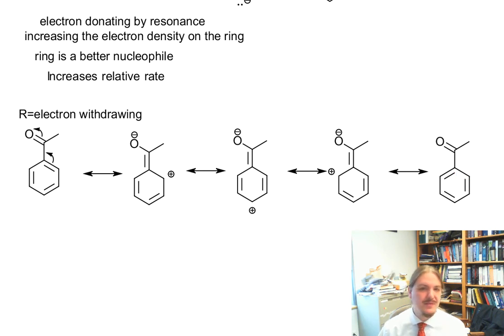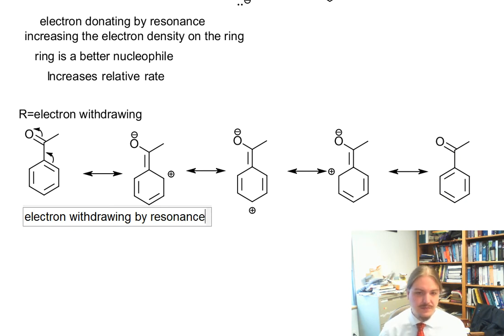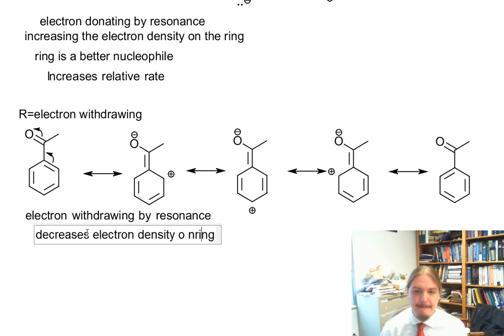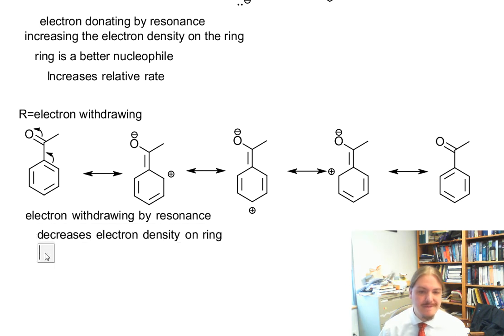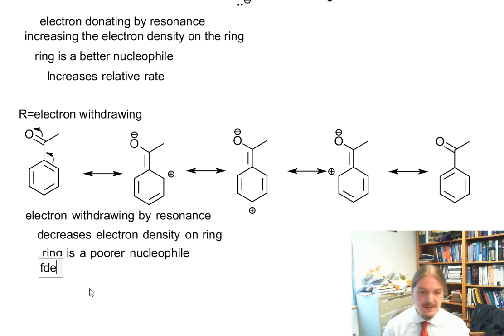This functional group is electron withdrawing by resonance. It decreases electron density on the ring, making the ring a poorer nucleophile — it has less electron density and is reacting with something that wants electron density, so that pairing is not quite as effective.